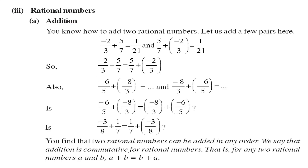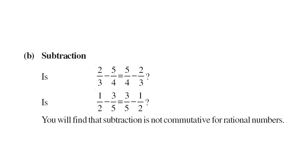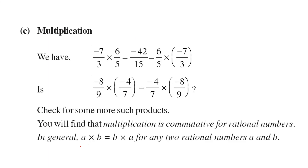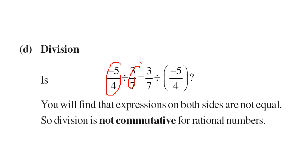For rational numbers, when we add two rational numbers in P by Q form, the result is always a rational number, and two rational numbers can be added in any order — so a plus b equals b plus a. Subtraction is not commutative for rational numbers since the results are different. Multiplication is commutative — a into b and b into a give the same rational number. Division is not commutative — as shown, dividing in different orders gives unequal results.